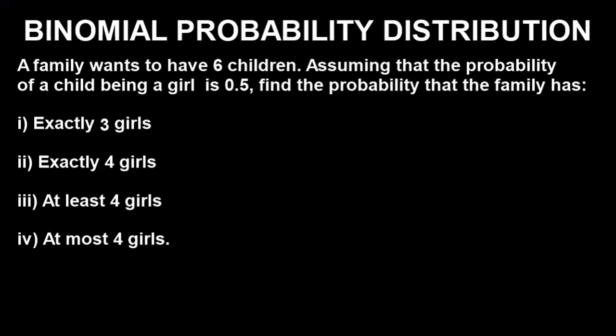Before we bring out the calculator, let's look at the question we're going to solve together. The question says: if a family wants to have six children, assuming that the probability of a child being a girl is 0.5, find the probability that the family has: (i) exactly three girls, (ii) exactly four girls, (iii) at least four girls, and (iv) at most four girls.